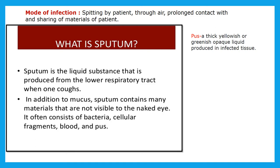Let us see what is the meaning of sputum. Sputum is a liquid substance produced from the lower respiratory tract when one coughs. In addition to mucus, sputum contains many materials not visible to the naked eye. It often consists of bacteria, cellular fragments, blood, and pus. Pus is a yellowish or greenish opaque liquid produced in infected tissue.